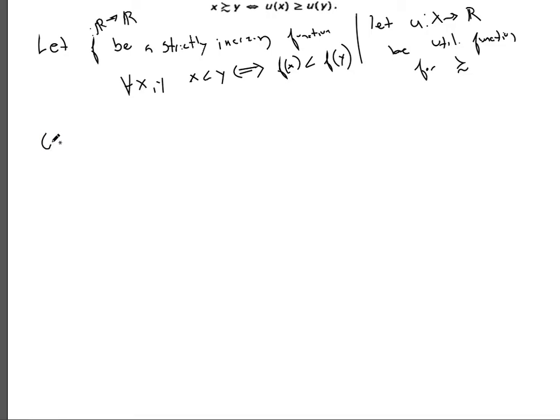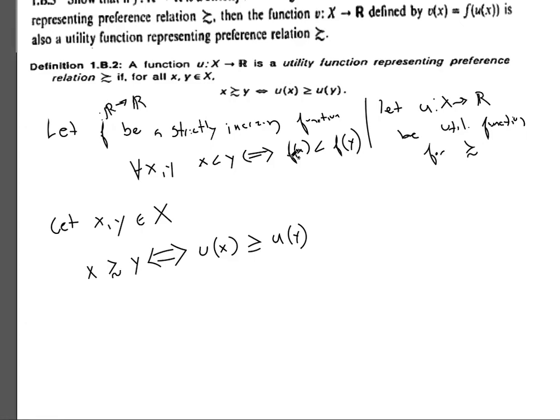We'll start with letting x, y be elements of our set X. And because u is a utility function, we have x weakly preferred to y if and only if u of x is greater than or equal to u of y. And this is the definition of our utility function.